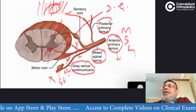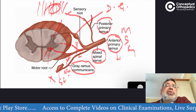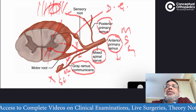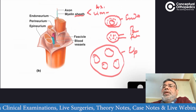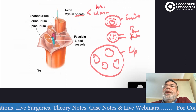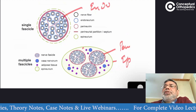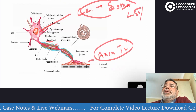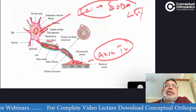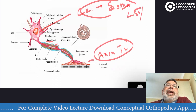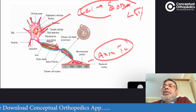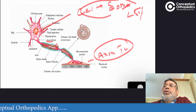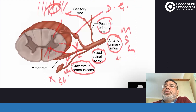For an exam, you need to draw three diagrams. First, what the nerve consists of: axons, endoneurium, perineurium, and epineurium. Second, how the axon originates — sensory cell bodies are in the dorsal root ganglion and motor cell bodies (alpha motor neurons) are in the anterior horn of the spinal cord. Third, there is a communicating ramus providing sympathetic supply. Together these components form the complete peripheral nerve.